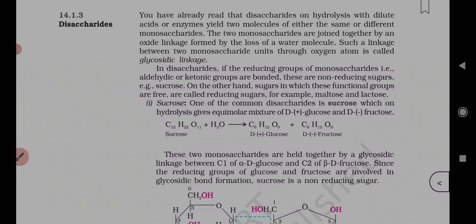What is glycosidic linkage? The two monosaccharides are joined together by an oxide linkage formed by the loss of a water molecule. Such a linkage between two monosaccharide units through an oxygen atom is called glycosidic linkage. Between two monosaccharide units there is an oxygen atom, that is why on hydrolysis we get monosaccharides.